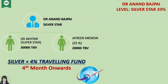The leadership bonus starts at the level of silver star. The level of silver star is 33%. When it comes to the silver break, what should we do for the business plan? For a superstar, on the side 20,000 BBs — if this is the result, then it becomes silver, and when it becomes silver it becomes 33%, and here it becomes a leadership bonus and then a travelling fund.